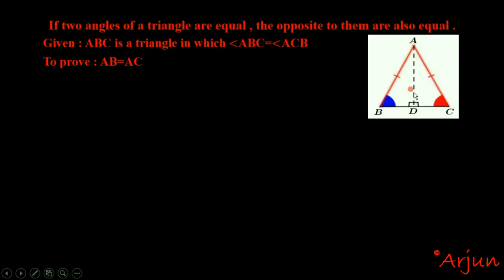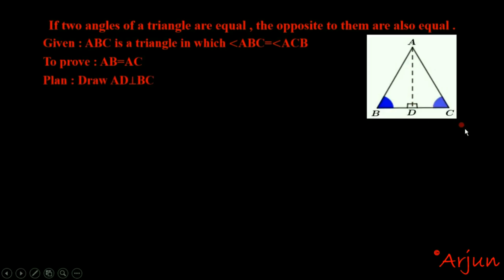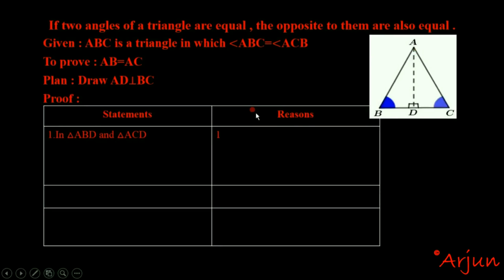The two sides are to be proven equal. The plan is to draw AD perpendicular to BC, so BC is perpendicular to AD. The proof proceeds by statement and reason.